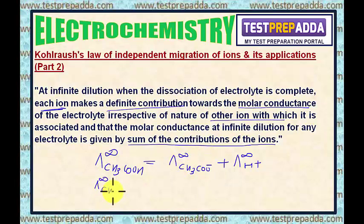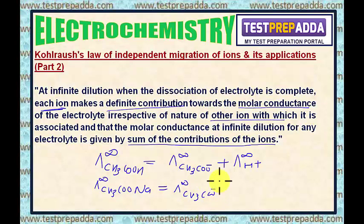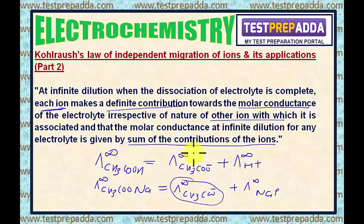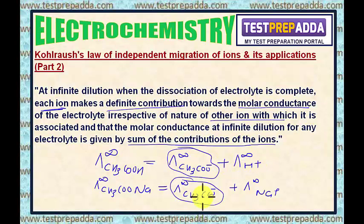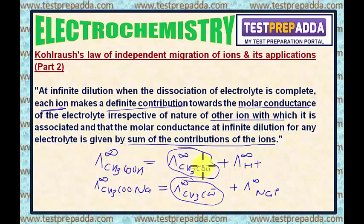For example, if I write CH₃COONa, this will be written as CH₃COO⁻ plus Na⁺. As per the law, the contribution of CH₃COO⁻ in this case and the previous case are the same magnitude-wise, although in one case it is present with H⁺ and in this case it is present with Na⁺. But it is independent of the other ion with which it is associated.